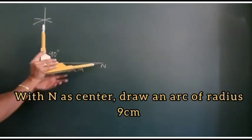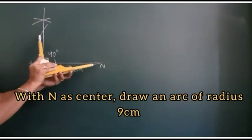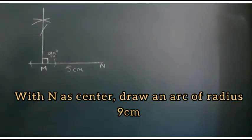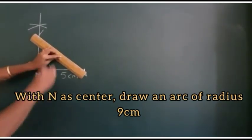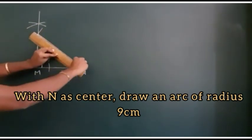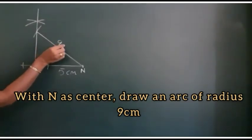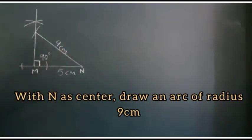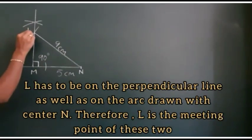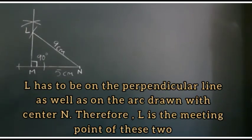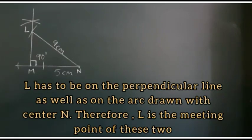In our next step with N as center draw an arc of radius 9 centimeters. L has to be on the perpendicular line as well as on the arc drawn with center N. Therefore, L is the meeting point of these two.